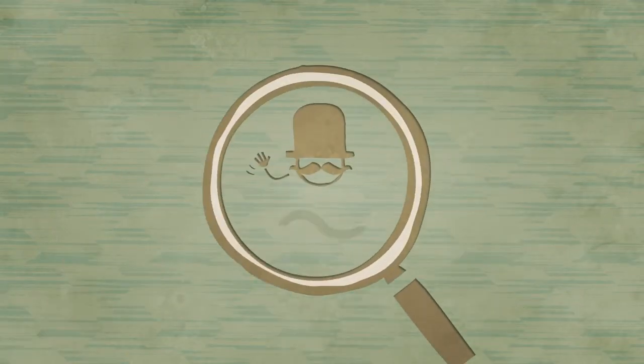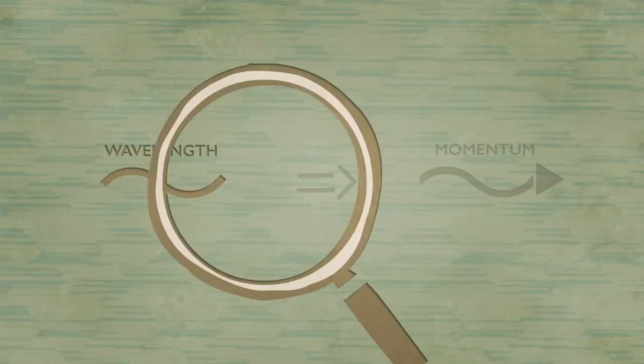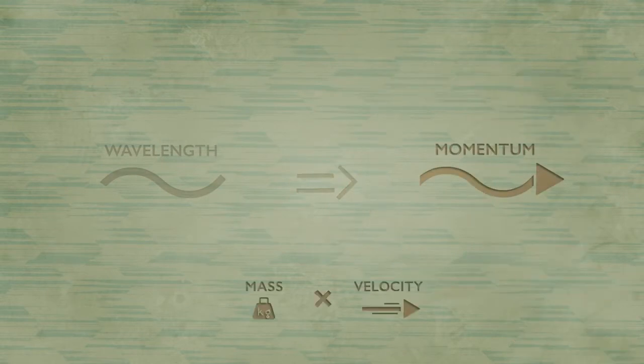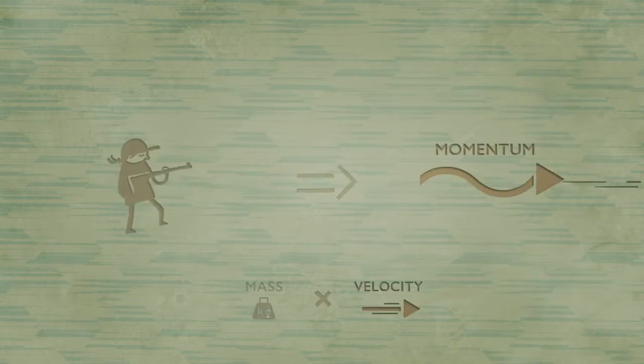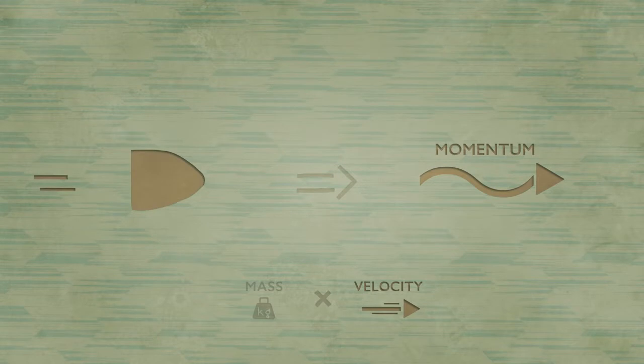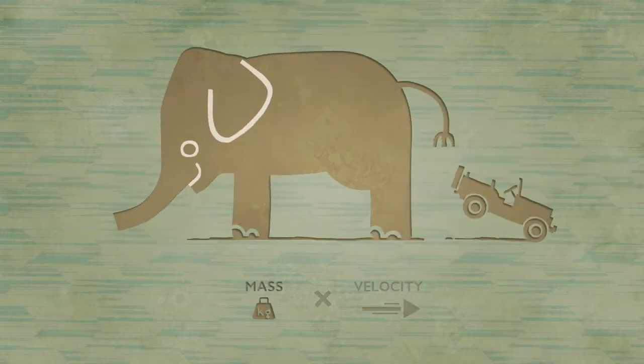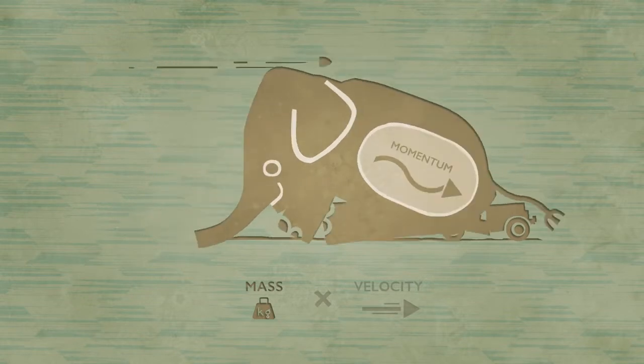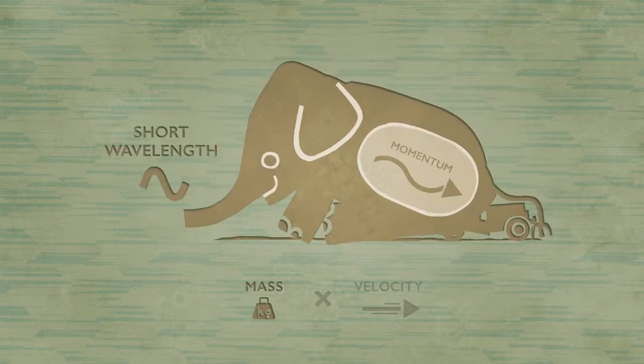Wavelength is essential for quantum physics, because an object's wavelength is related to its momentum—mass times velocity. A fast-moving object has lots of momentum, which corresponds to a very short wavelength. A heavy object has lots of momentum even if it's not moving very fast, which again means a very short wavelength.